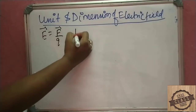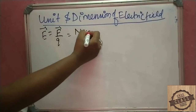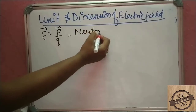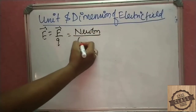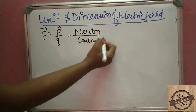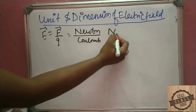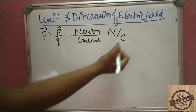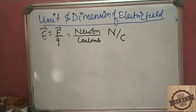The unit of force is Newton, and the unit of charge is Coulomb (C). So the unit of electric field intensity is Newton per Coulomb.